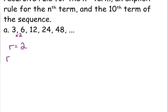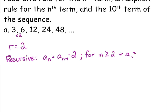The recursive rule, that would be A sub N is equal to A sub N minus 1 times 2. Typically, we would put that in front, not after that, but we'll just leave it for the moment. And that is for N is greater than or equal to 2, and A sub 1 equals 3. Don't forget, you have to put those qualifiers on there.